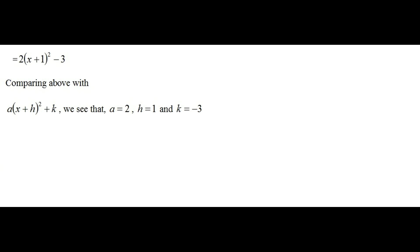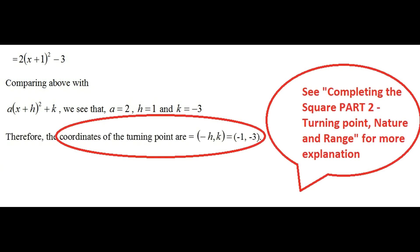From the last video, we need the values of a, h and k in order to work out the coordinates of the turning point. The result is that the turning point has coordinates (minus h, k). Our h value is 1, so the x-coordinate of the turning point is minus 1. The k value is minus 3, so the y-coordinate of the turning point is minus 3.